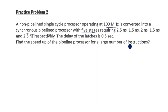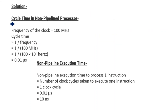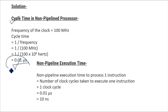So let's start. This is a non-pipeline single-cycle processor with a frequency of 10 megahertz. First we will calculate the cycle time in the non-pipeline processor. Since frequency is given, cycle time equals 1 divided by frequency, which gives 0.01 microseconds, or equivalently 10 nanoseconds. For a non-pipeline processor, execution time equals cycle time, which is 1 clock cycle — so non-pipeline execution time equals 10 nanoseconds.